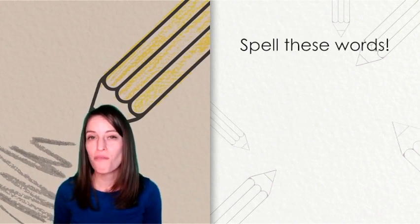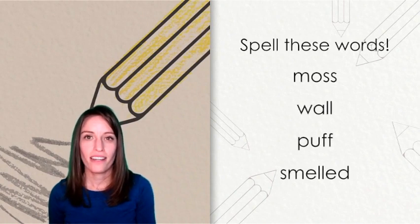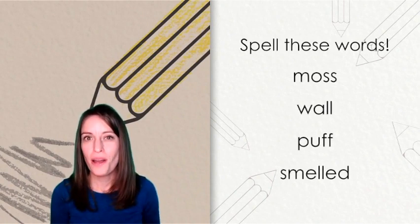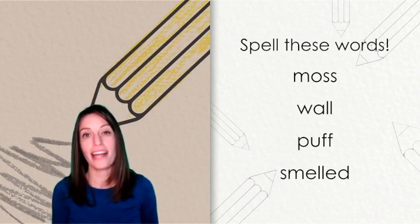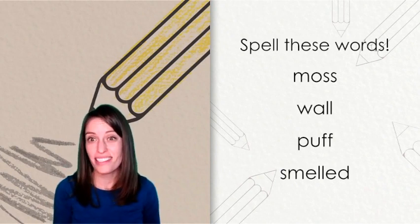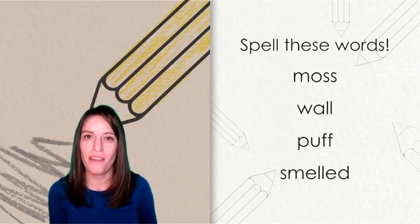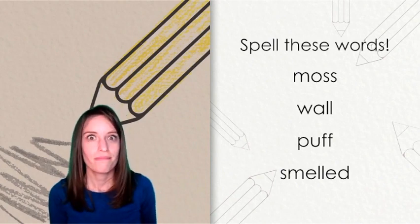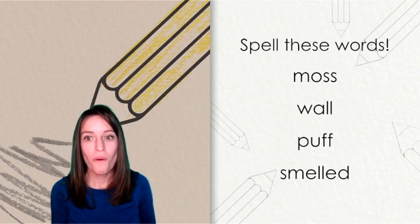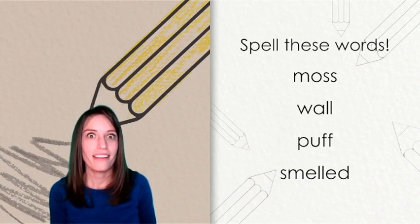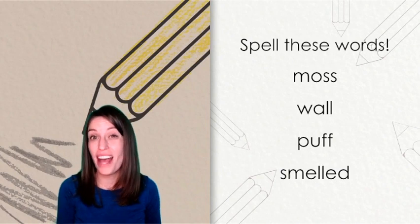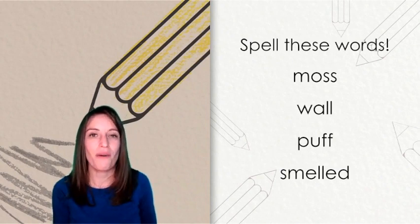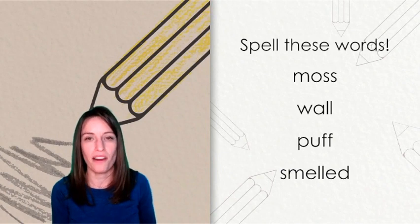Let's take a peek at the four words. The first word, moss. M-O-S-S. It has a double S because of that short vowel O. The next word was wall. This word also followed the floss rule and it has two L's because there was a short vowel A in the middle of the word.